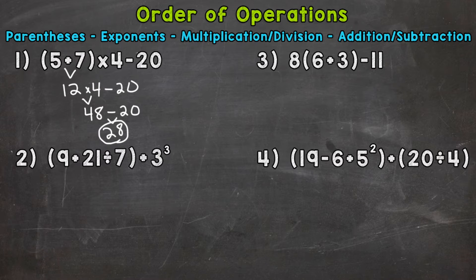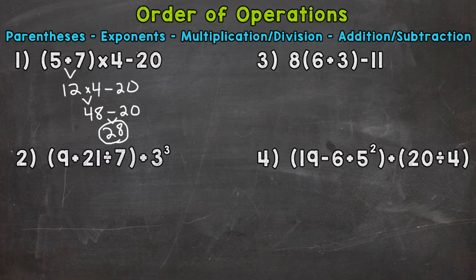Let's move on to number two, where we have parentheses 9 plus 21 divided by 7, end parentheses, plus 3 to the third power, or 3 cubed. Any parentheses? Yes, so that's where we start. We have addition and division within those parentheses, so we kind of have an order of operations problem within an order of operations problem. Let's go through our steps for inside those parentheses. Any parentheses inside the parentheses? No. Any exponents? No. Any multiplication or division? Yes. So that's where we start: 21 divided by 7,